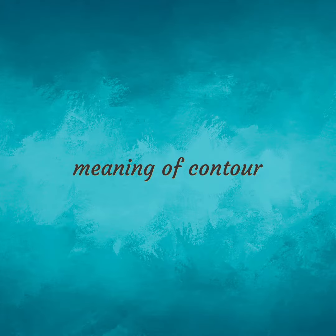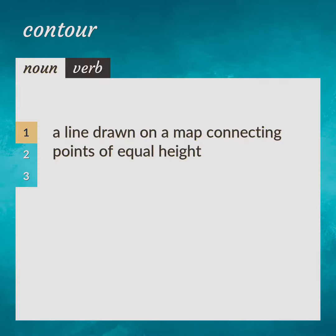Meaning of Contour. A line drawn on a map connecting points of equal height.